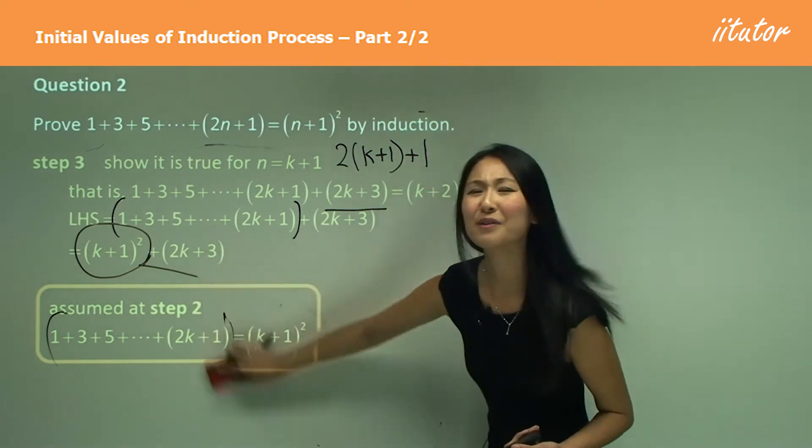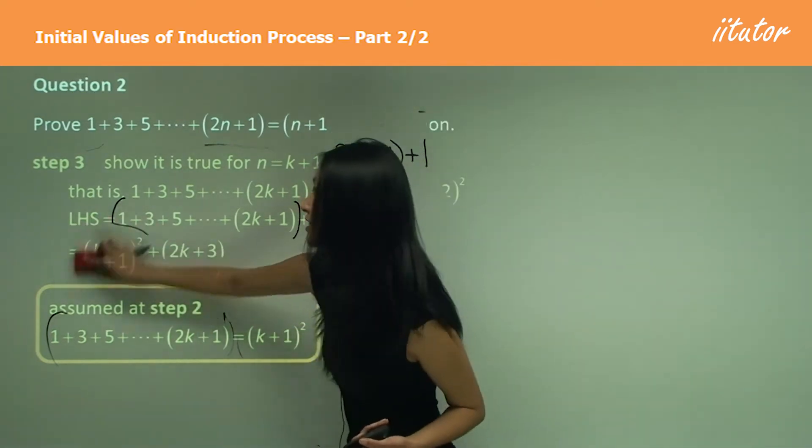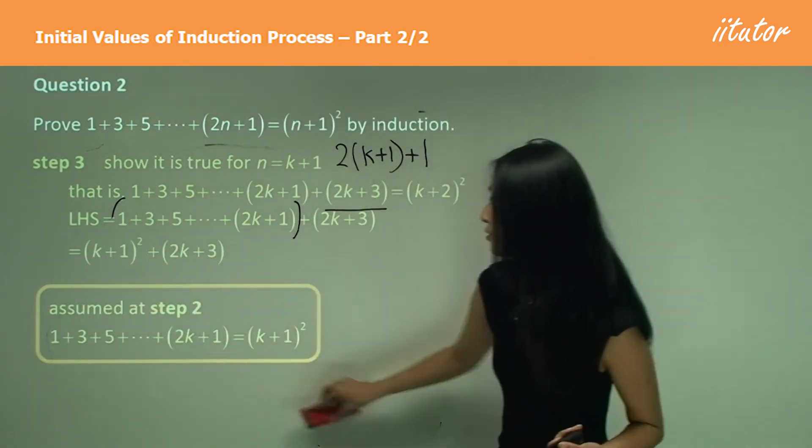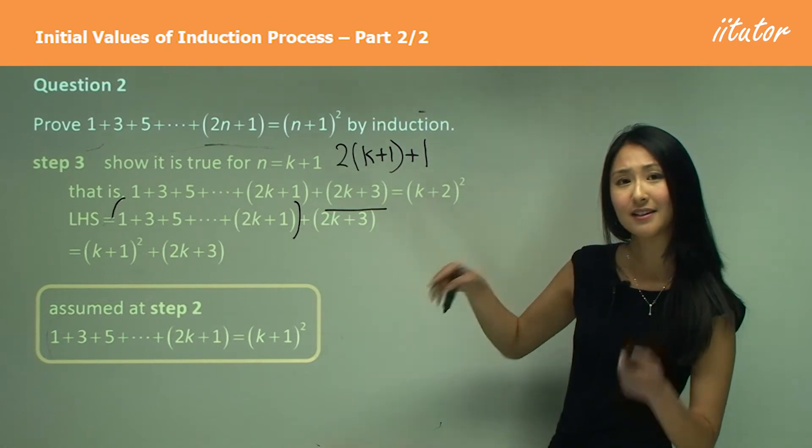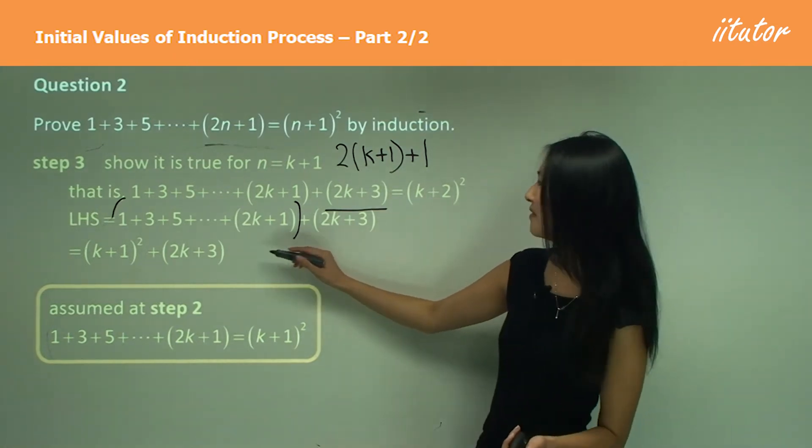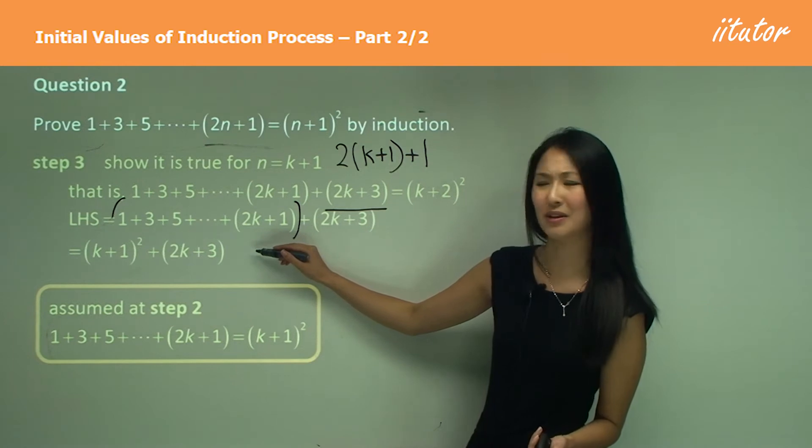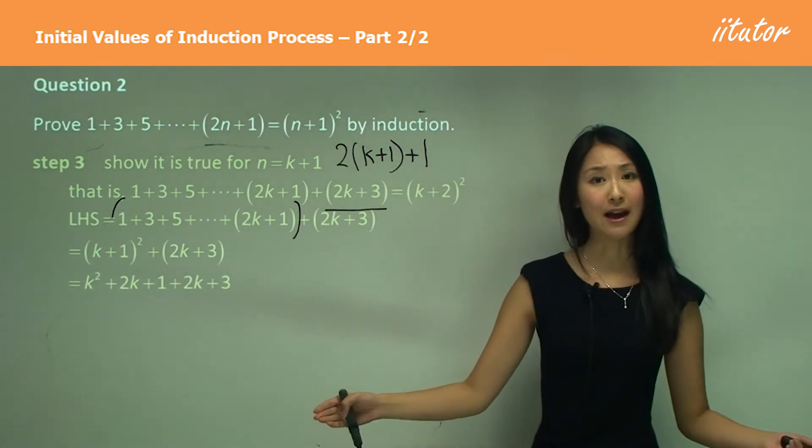And somehow, so you always want to keep in mind, what am I actually doing here? What I want to do is make this look like the right hand side, right? So always keep that in mind. How am I going to do that? There's nothing I can really factorize or do here. So I know I need to expand first.